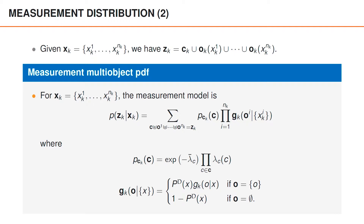Note how easy it is to derive the measurement model from the model assumptions — it's barely a derivation. We essentially just look at the model assumptions and use the convolution formula to write it down. Another interesting aspect is that the summation may include associations we consider impossible, for instance that 10 measurements are associated to the same object. Those terms can simply be ignored since gk then takes the value zero. However, you can use this formula also if single objects can generate multiple measurements by adjusting the expression for gk, giving us a measurement model for extended objects in an almost trivial fashion.